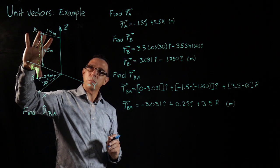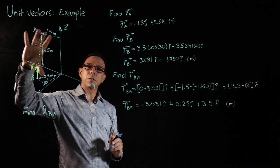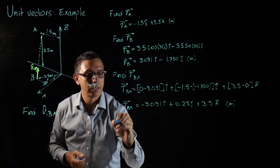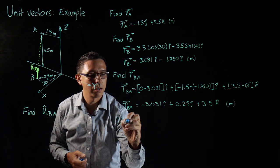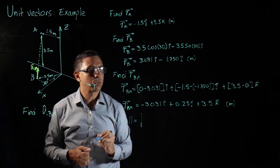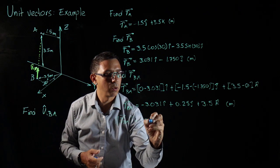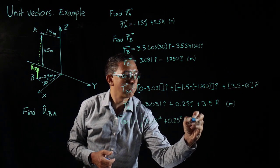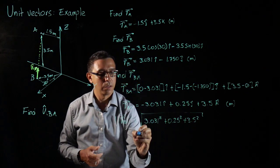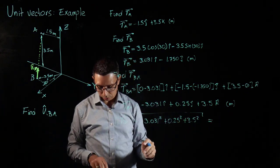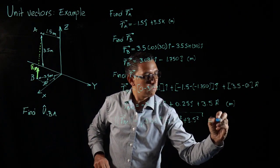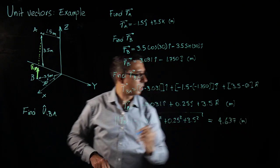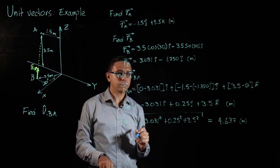Very good. So if we have this vector from B to A and we want to find the unit vector, what we need to find is the magnitude of that vector and then divide the vector by the magnitude. So let's define magnitude of R_BA. That will be the square root of 3.031 square plus 0.25 square plus 3.5 square. And that gives me, if my calculations are okay, 4.637 meters.